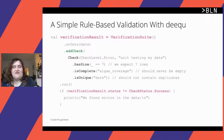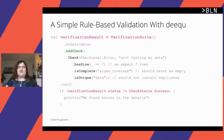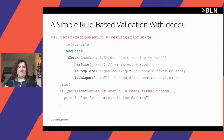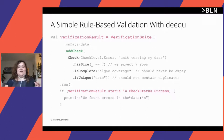For rule-based validation with Deequ, the whole example fits on one slide. First, instantiate the verification suite. Then define the dataset. Add checks using a daisy chain — for example, three checks: the dataset has seven rows (one per day), the algae coverage field should never be empty, and the data is unique. Then run the validation and check the status of the verification result. If it's not a success, you can print an error, throw an exception, or notify your logging system.